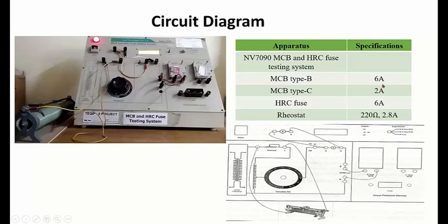MCB type B has a rated current of 6 ampere. Type C MCB has a rated current of 2 ampere. The HRC fuse uses a maximum current of 6 ampere. The rheostat can be varied to a maximum of 220 ohms and has a rated current of 2.8 amperes.